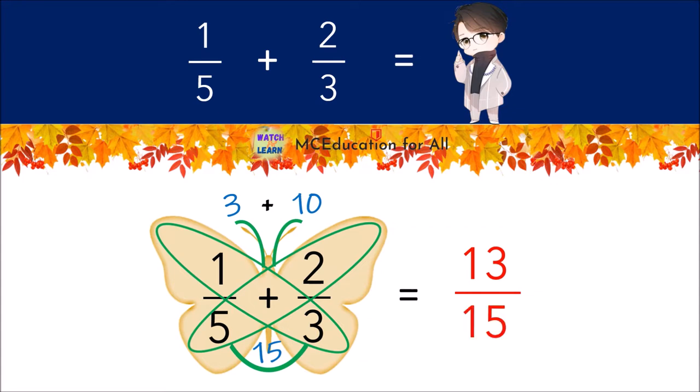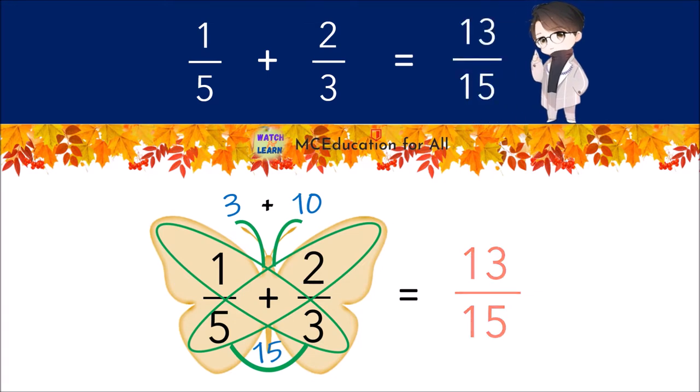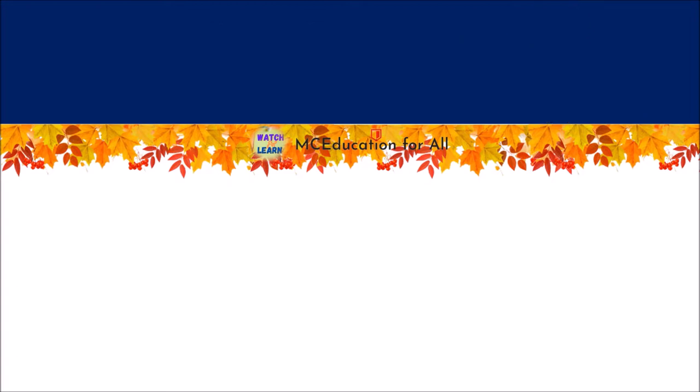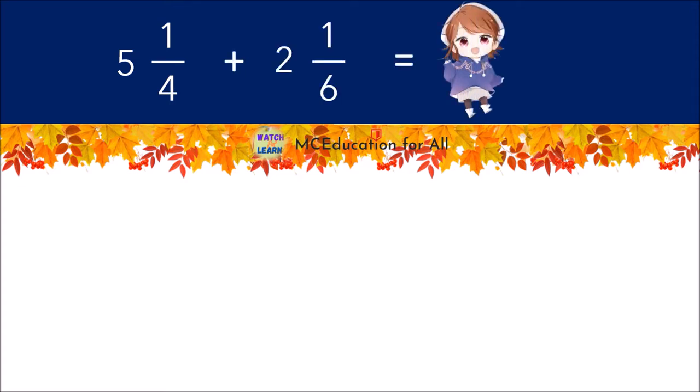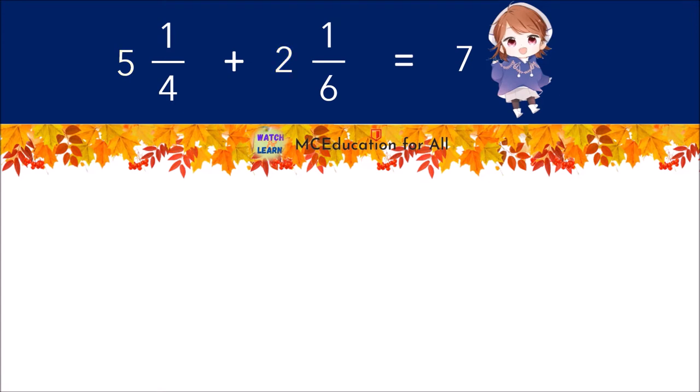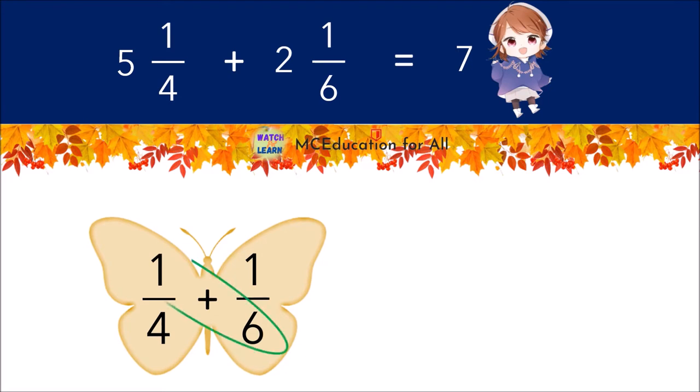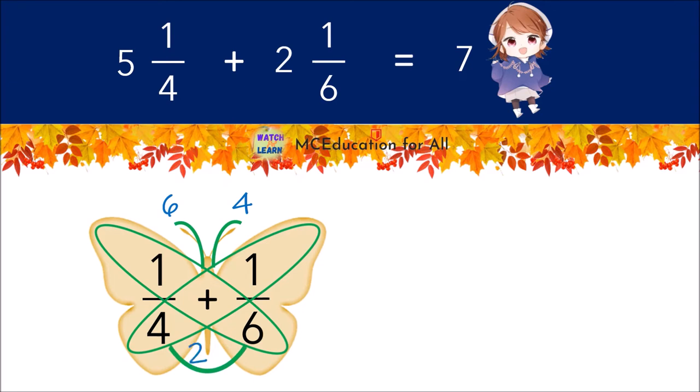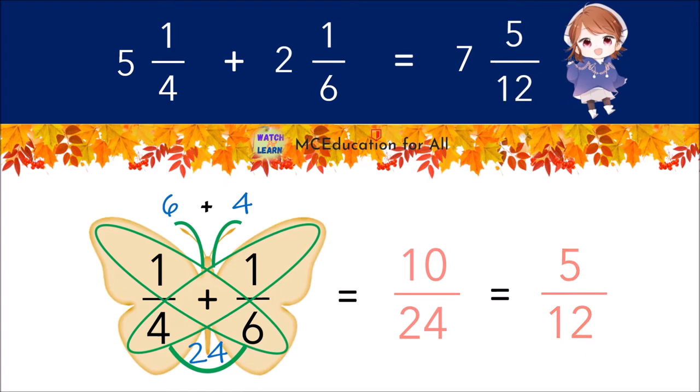Therefore one-fifth plus two-thirds equals thirteen-fifteenths. Another example: five and one-fourth plus two and one-sixth. In adding mixed numbers, let's add first the whole numbers. Five plus two is seven, then repeat the process of adding fractions using the butterfly method. Don't forget to simplify your answer if needed. Thus the final answer is seven and five-twelfths.